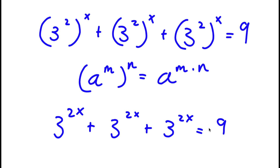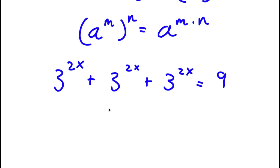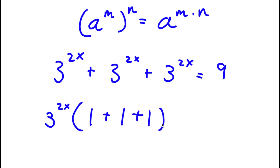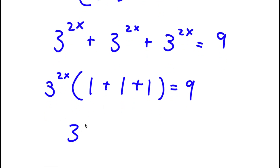If I factor out 3 to the power of 2x from the left-hand side, I get 3 to the power of 2x times 1 plus 1 plus 1 is equal to 9. Now 1 plus 1 plus 1 equals 3, so I have 3 to the power of 2x times 3 is equal to 9.